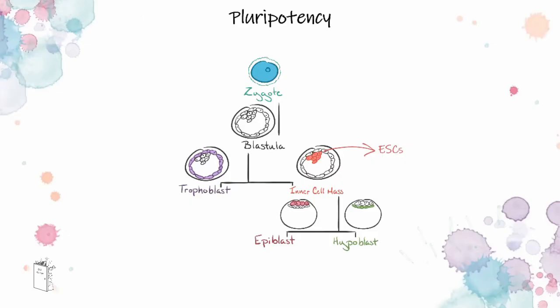I'll start by reminding you what pluripotency is. Pluripotent cells are cells that can generate any cell type present in the adult body, making them a powerful tool for the study of human development, but also disease. Pluripotency exists only during a brief time window of pre-implantation development in the cells of the inner cell mass.